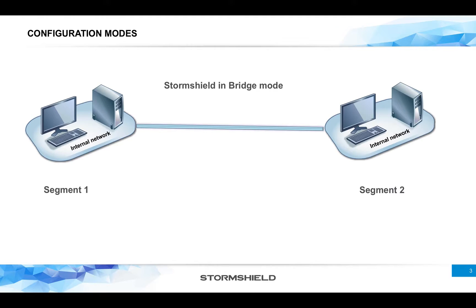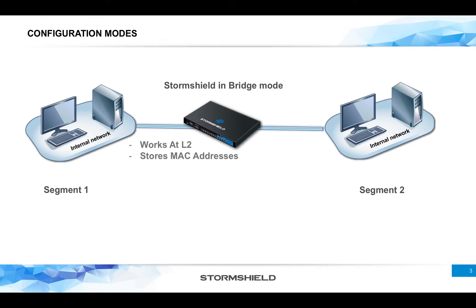When it comes to StormShield in bridge mode, it's different. It shares some bridge features — it works at Layer 2, stores MAC addresses, and reduces traffic — but it supports more ports and segments. It's not limited to two segments; you can have three, four, five, or six depending on how many interfaces you have. VLANs can also be members of a bridge, which we can discuss in advanced videos.